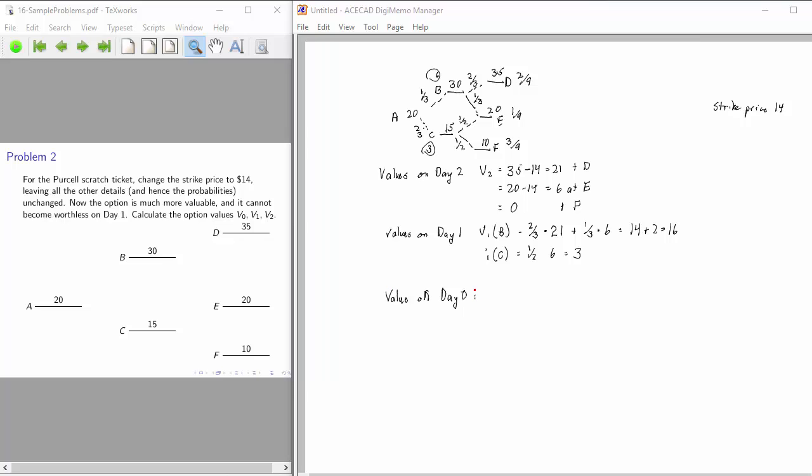And now we can work back to day zero. On day zero, we have a probability of one-third that the share price is going to advance to 30, in which case we just figured out the value of the option is 16. We have a probability of two-thirds that the share price will drop to 15, in which case we just figured out the option value is 3. And 16 thirds plus 6 thirds is 22 thirds. Next time we're going to recover this number by a calculation that involves designing the perfect hedge and that never mentions these probabilities.